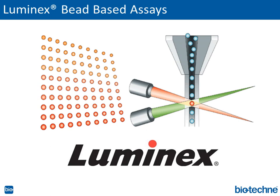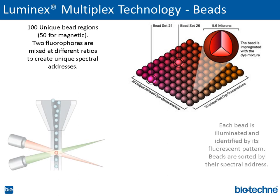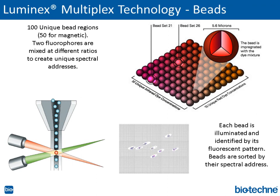We provide several types of multiplex assays at R&D Systems; today we'll focus on our Luminex bead-based assays. At the heart of the system are the beads, which are dyed with two fluorophores in very specific ratios. By using 10 concentrations of each of those dyes, this creates a 100-bead set, each having its own fluorescent pattern — which we call a spectral address. As the beads make their way through the flow cell, they're illuminated by two lasers or LEDs. One excites the dyes and photodiodes detect the fluorescent pattern; the computer sorts each bead into its unique address.